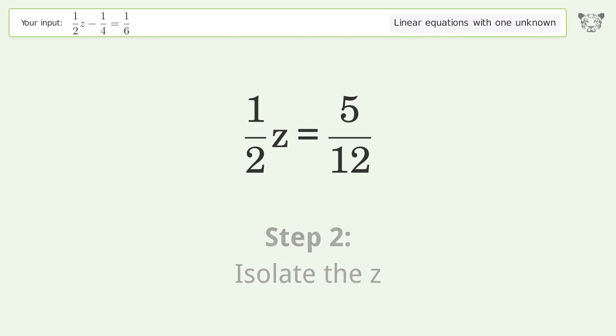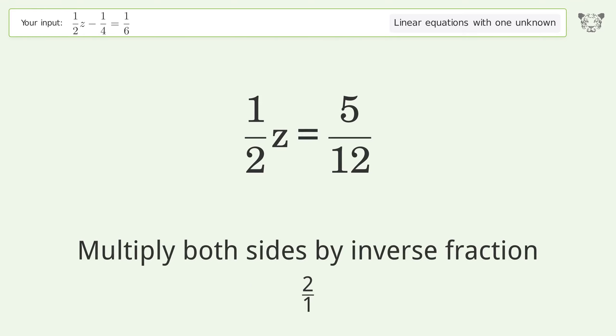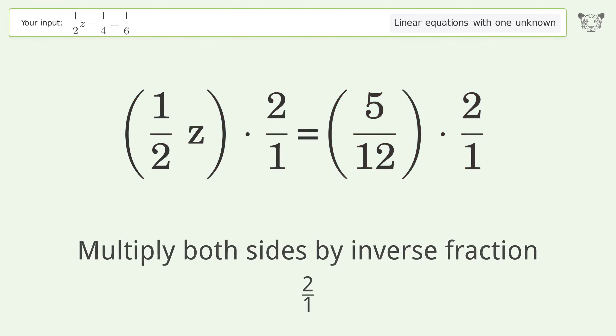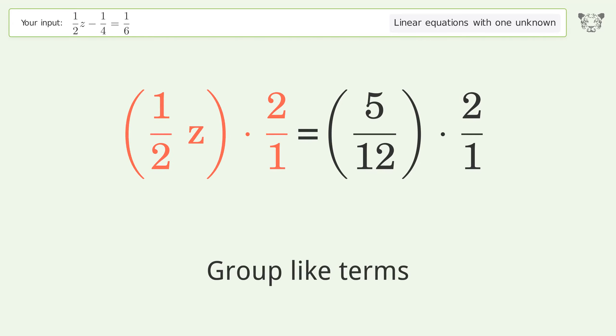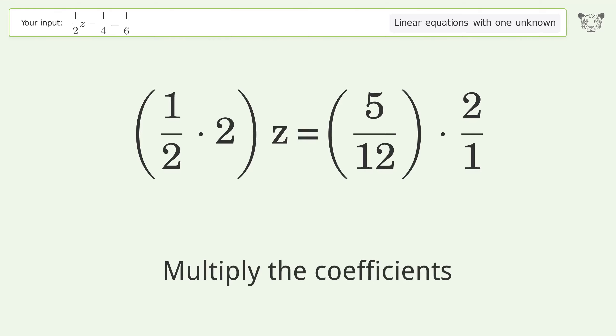Isolate the z. Multiply both sides by inverse fraction 2 over 1. Group like terms, multiply the coefficients.